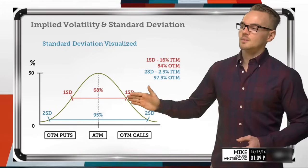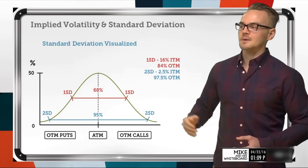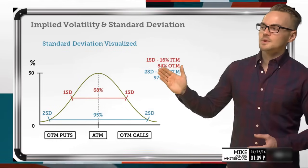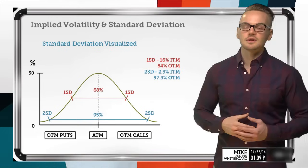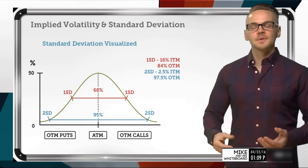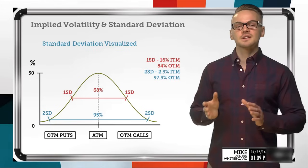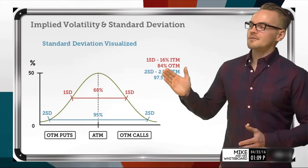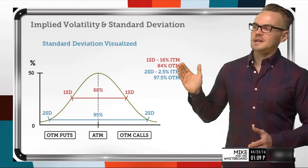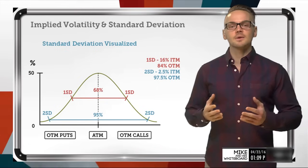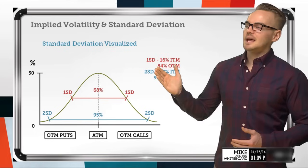So when looking at one or two standard deviations, we're going to have different ranges and occurrences within those ranges. If you want to calculate what percentage would be out of the money — for example, on the dough platform we look at percentage of being out of the money — if I know that a 16% probability of being in the money gives me a one standard deviation level, then an 84% probability of being out of the money gives me that very same level.